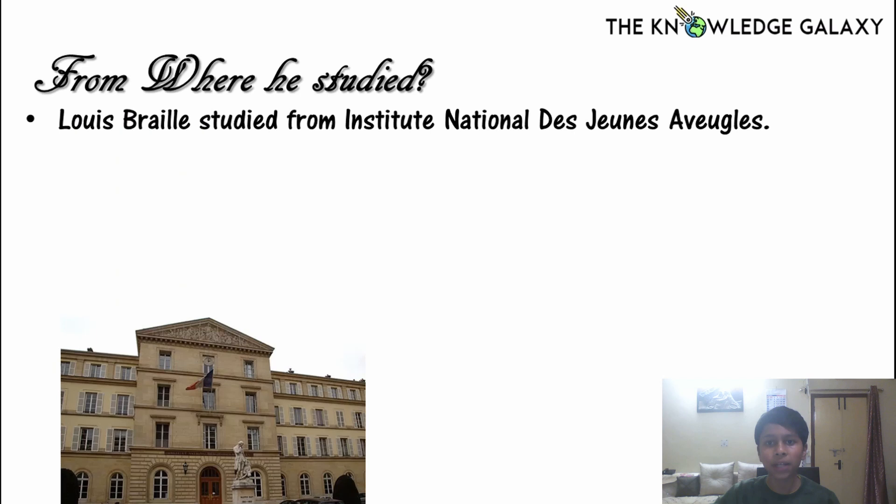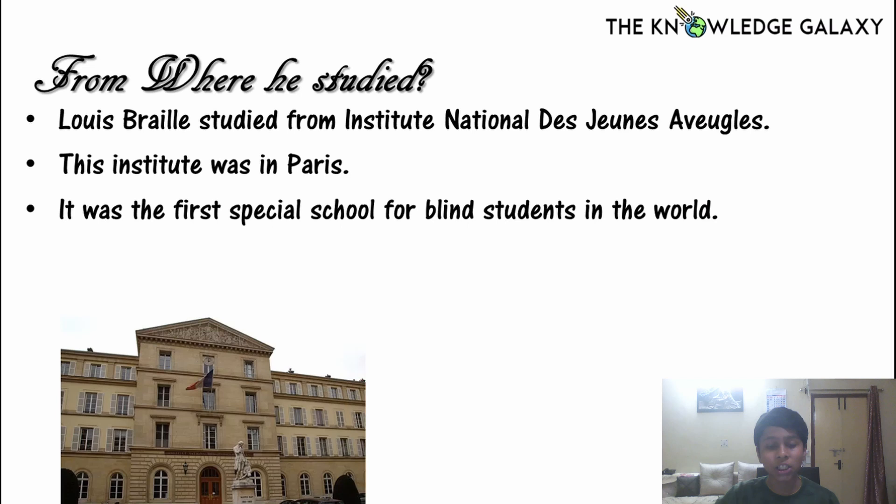Louis Braille studied from the Institut National de Jeunes Aveugles. This institute was in Paris. It was the first special school for blind students in the world.